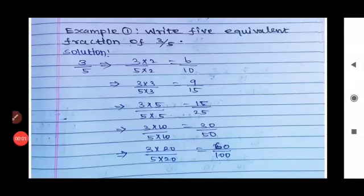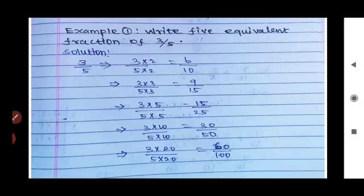Example 1: Write 5 equivalent fractions of 3/5. To find equivalent fractions, multiply the given fraction by 2, 3, 4, 5 and so on. The given fraction is 3/5. First, multiply by 2: 3×2=6, 5×2=10, giving 6/10 as the first equivalent fraction.